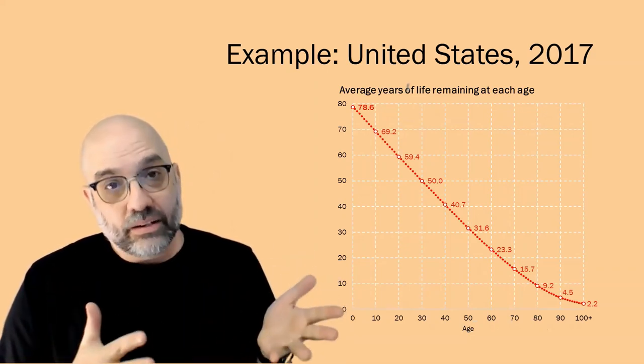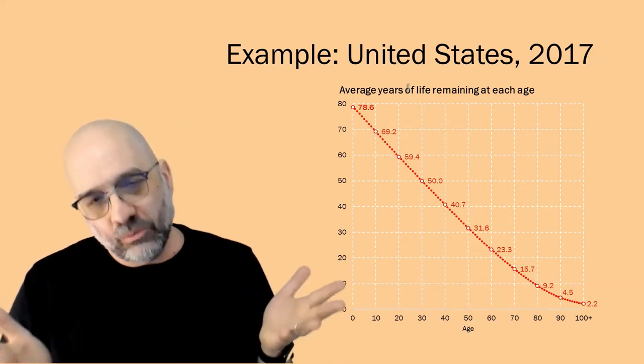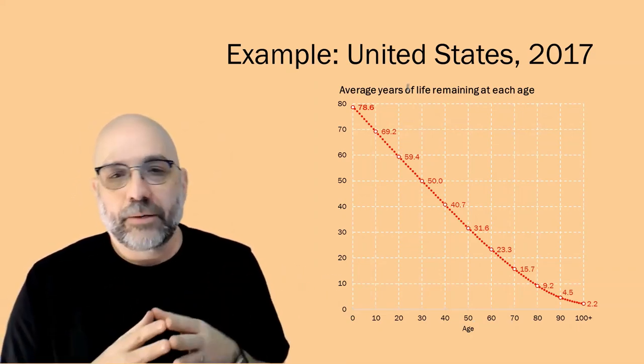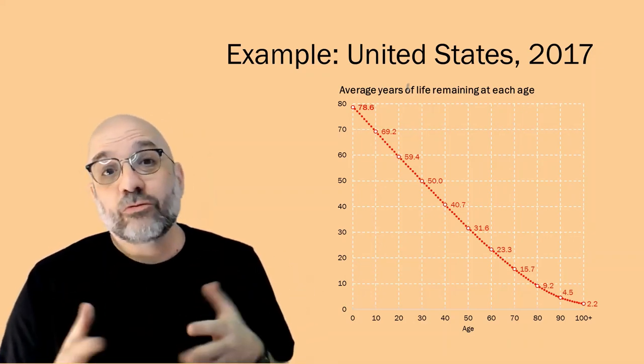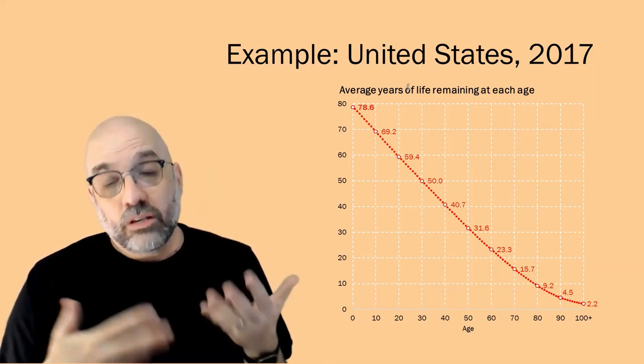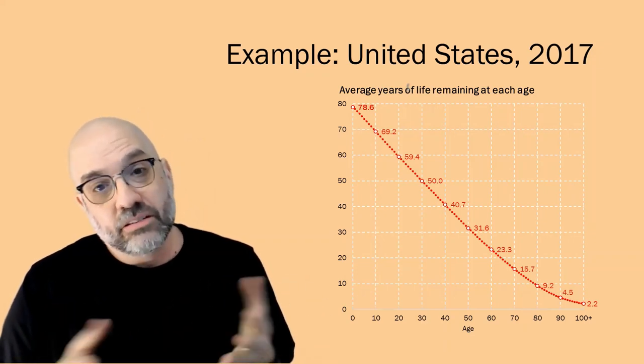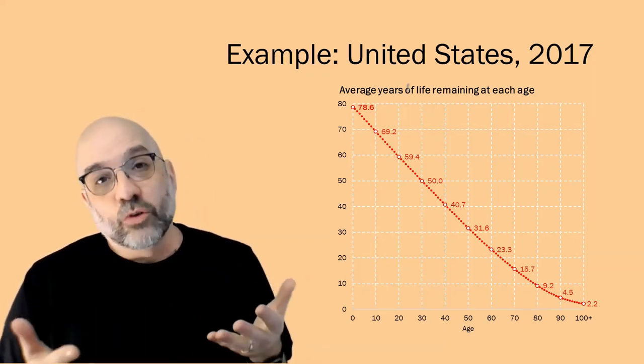Technically, it's life expectancy at age zero, but we usually just call it life expectancy. One thing you can see is that as soon as you make it past that first year of life, you can start to expect to live longer than the life expectancy at age zero.